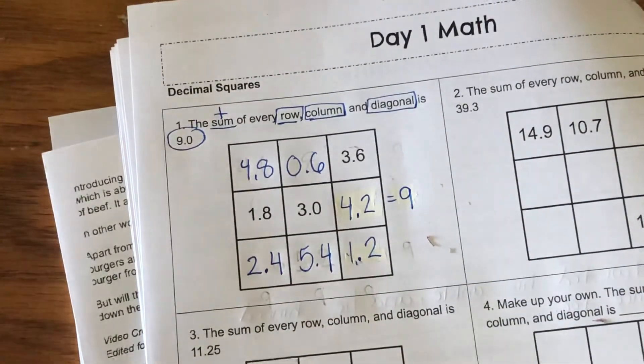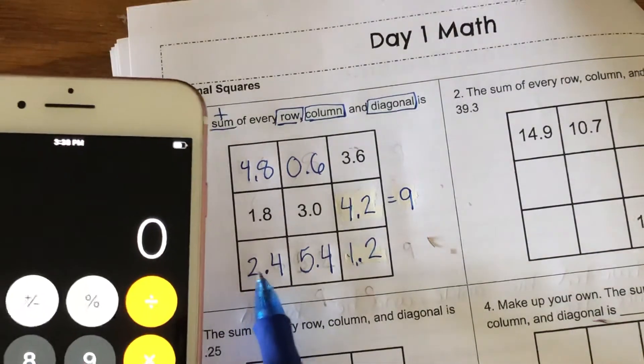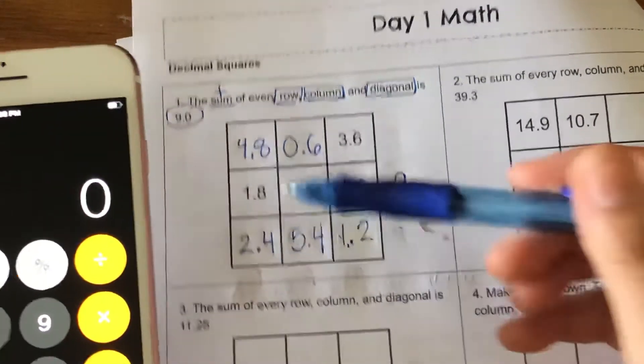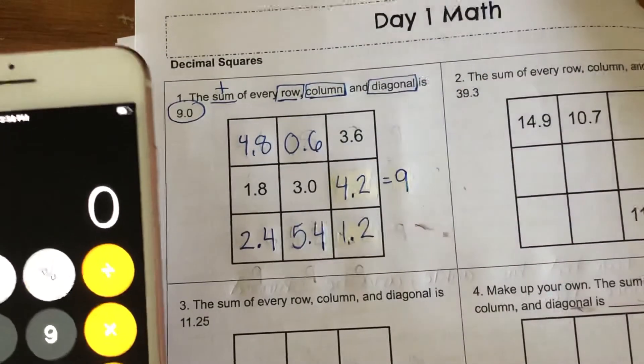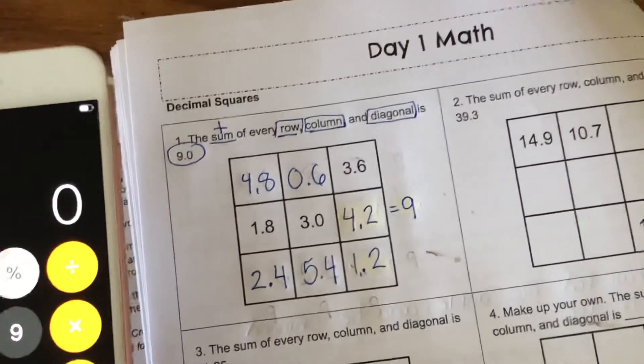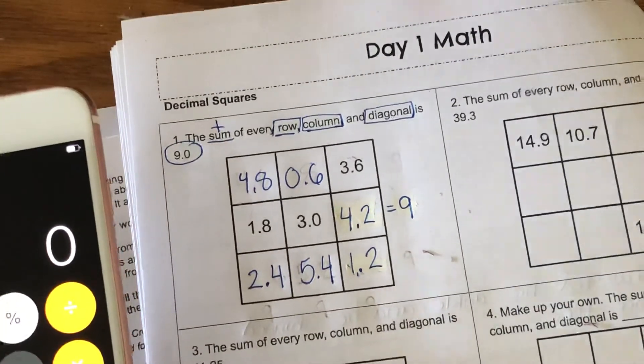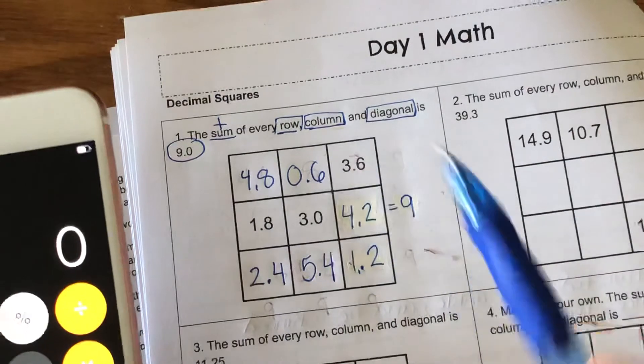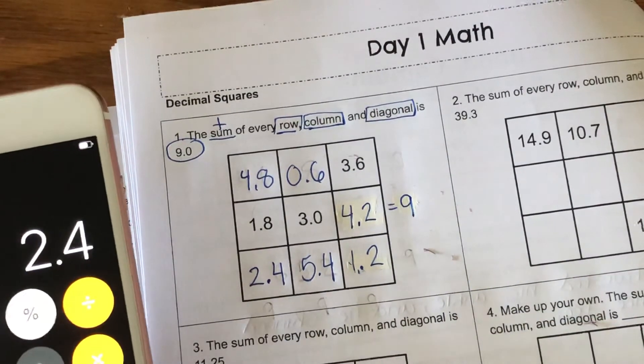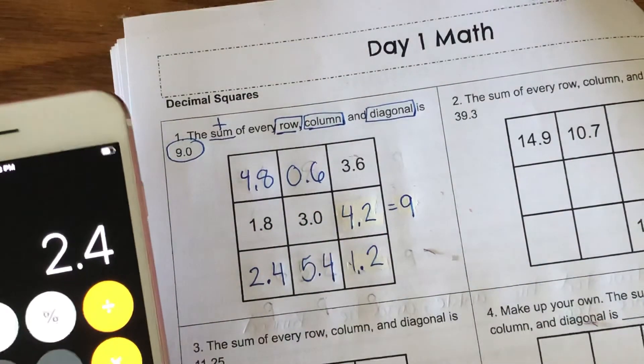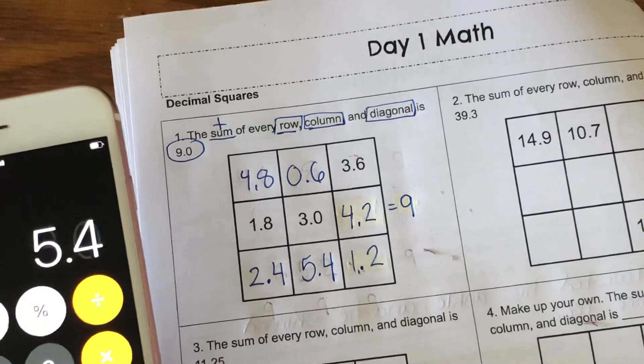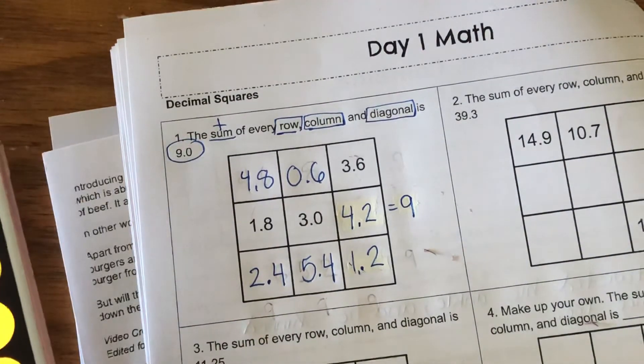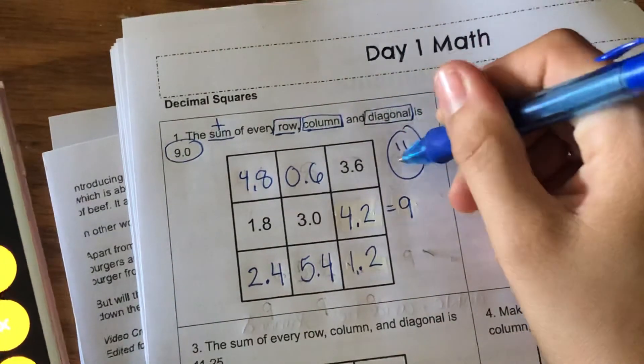If you want to double check, which you totally can, you literally just go in with your calculator or adding on paper at each of these rows, columns, and diagonals, and you should get 9. If you don't, you did something wrong. I'm gonna go ahead and check my diagonal this way: 2.4 plus 3.0 plus 3.6 equals 9. So I am golden. That one is correct.